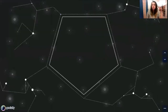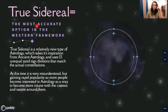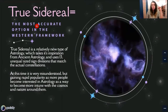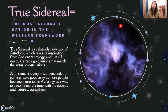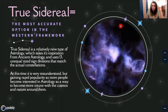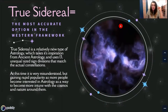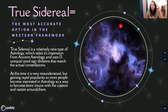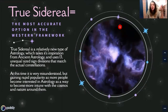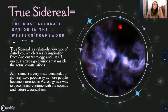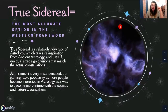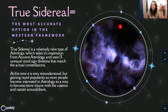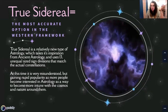So now we're going to talk about something called true sidereal astrology. In true sidereal astrology, this is the most accurate option that we have while still working within the Western framework. True sidereal is a relatively new type of astrology which takes its inspiration from ancient astrology and uses 13 unequal-sized sign divisions that match the actual constellations. At this time it is extremely misunderstood, but it is gaining rapid popularity as more people become interested in astrology as a way to become more in tune with the cosmos and nature around them.